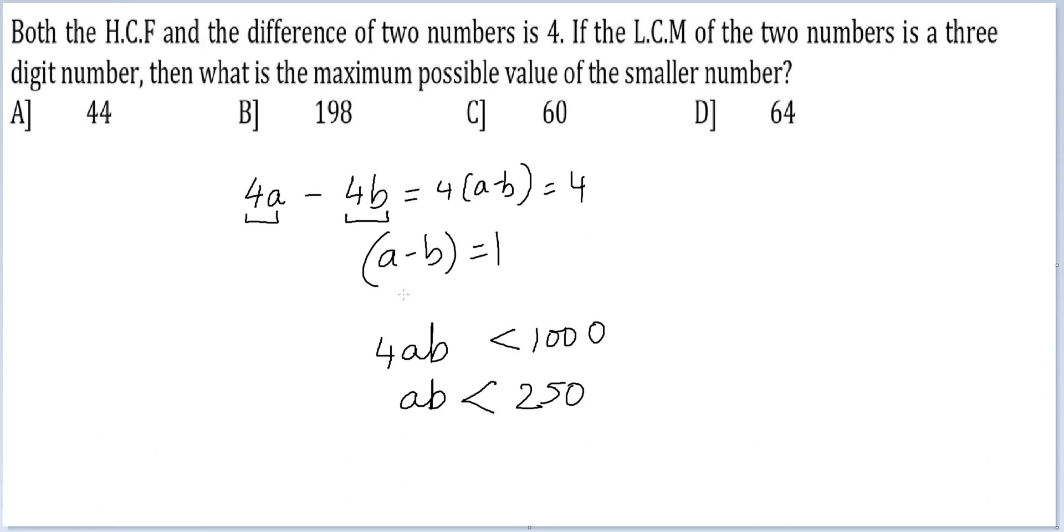A and B are two consecutive numbers, A minus B is equal to 1. So you can write it as B plus 1 times B is less than 250.